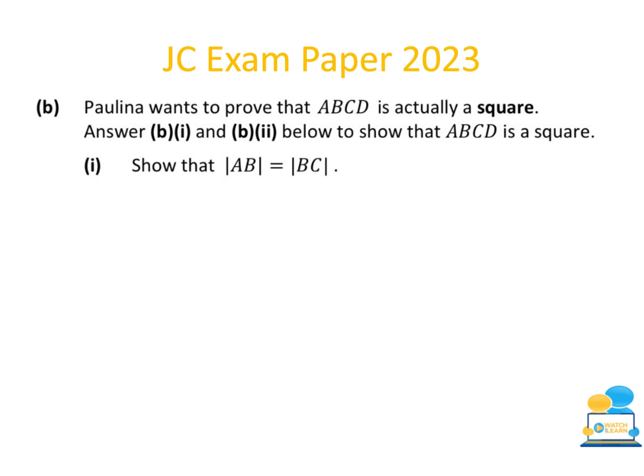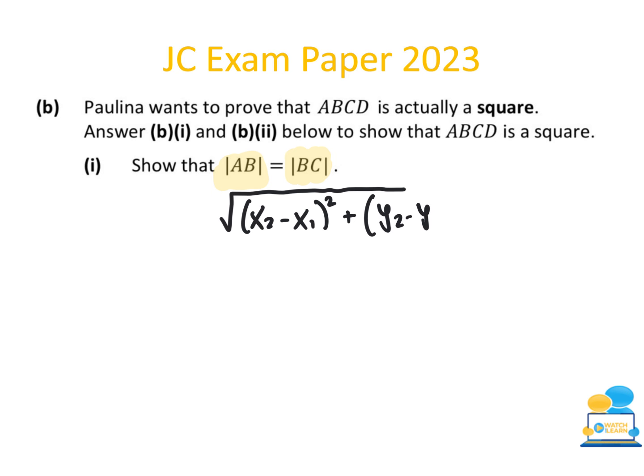Part B asks Paulina to prove that ABCD is a square. In part B1, we must show that the distance |AB| equals the distance |BC|, since all sides of a square are equal. To start, I write down the distance formula from the formula booklet: the square root of bracket x2 minus x1 close bracket squared plus bracket y2 minus y1 close bracket squared. We will use this formula twice, first for the distance between A and B.